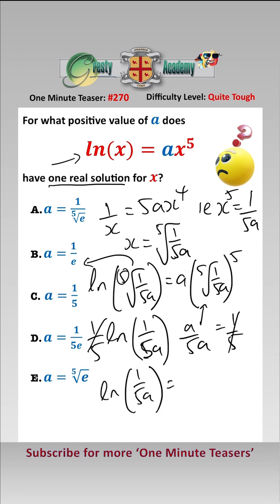I.e. 1 over 5a would equal e, so a equals 1 over 5e which is answer d.